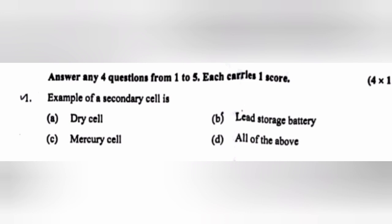1. Example of a secondary cell is: A. Dry cell, B. Lead storage battery, C. Mercury cell, D. All of the above. Answer: B. Lead storage battery.